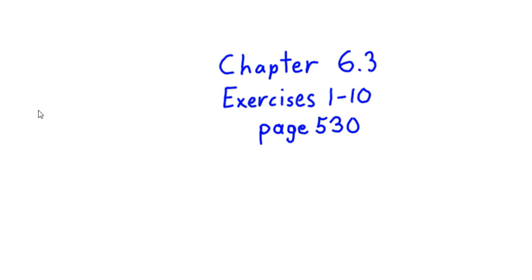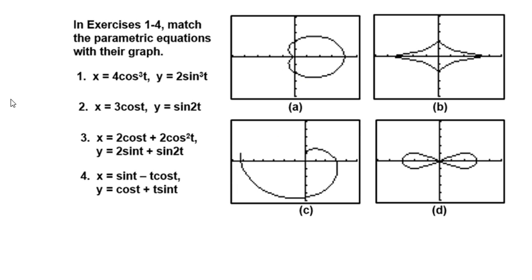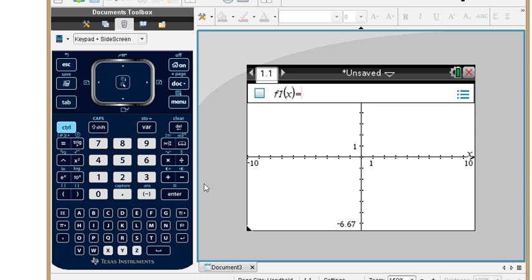Chapter 6.3, Exercise 1 through 10. Section 6.3 in our book has to do with parametric equations. We're going to do the odd number problems in the set 1 through 10. In this set, in Exercise 1 through 4, match the parametric equations with their graph. So basically, it's about entering these equations in our calculator and seeing which of these graphs on the right matches with each one of these equations. So for that, we go get a calculator. In this case, I have a TI-Nspire CX graphing calculator.